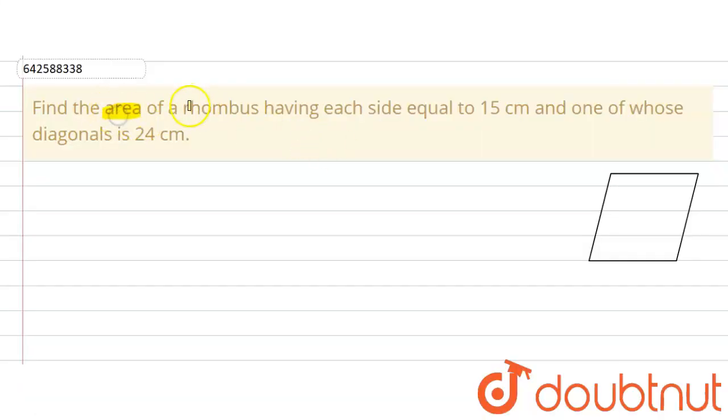The question says find the area of a rhombus having each side equal to 15 centimeters and one of those diagonals is 24 centimeters. So we are given one diagonal of the rhombus and the length of the side of the rhombus. We know that all the sides of the rhombus are equal.